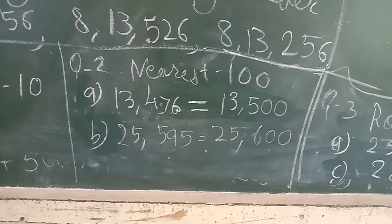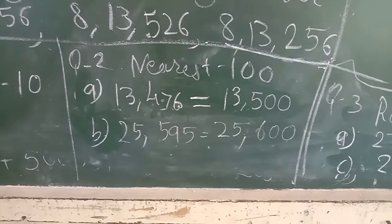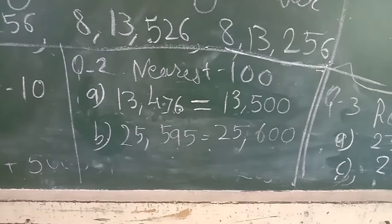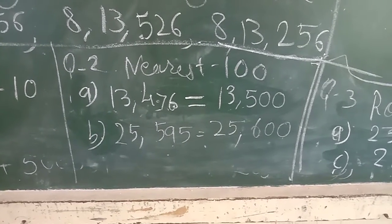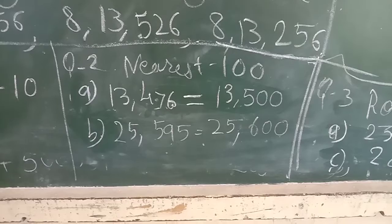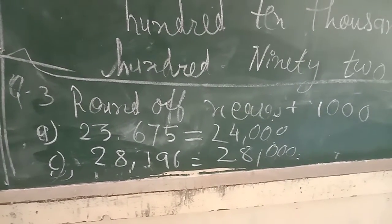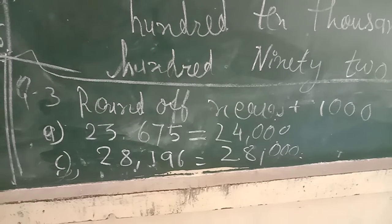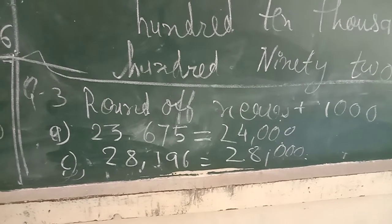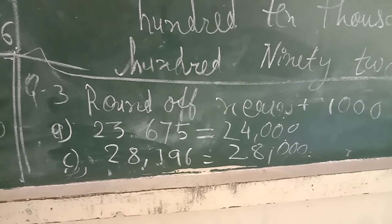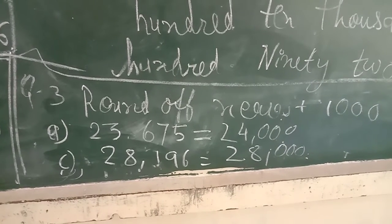Answer: 13,500. 25,595, answer: 25,600. Other numbers completed. Question 3: Round off nearest 1000. 23,675, answer: 24,000.